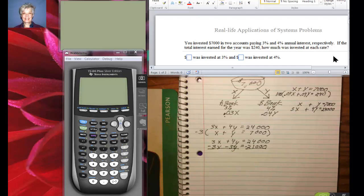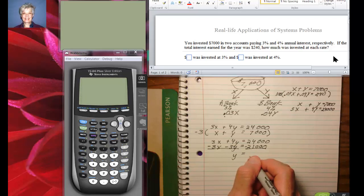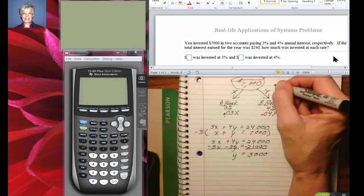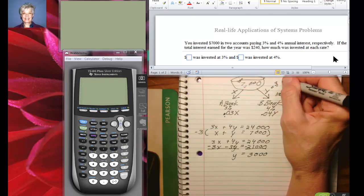All right, let's add these two equations together. 4Y minus 3Y is 1Y, and 24,000 minus 21,000 is 3,000. So now we know you put 3,000 in this account.